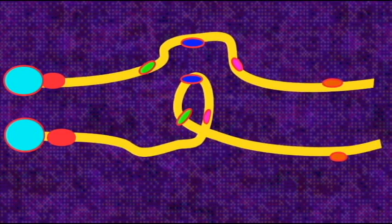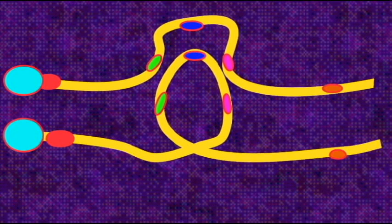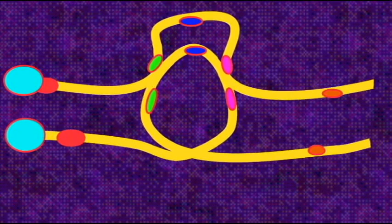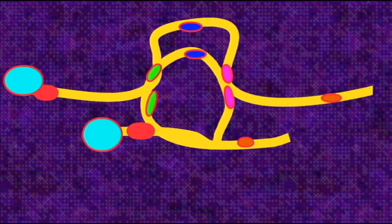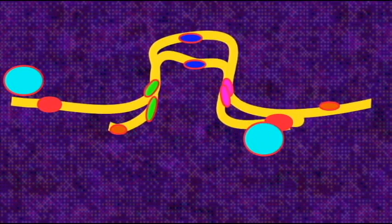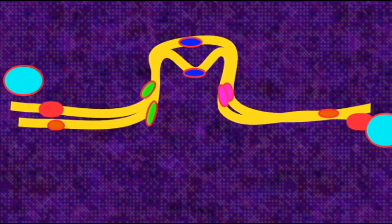Paracentric inversions are inversions which are outside the centromere. If crossing over occurs within the loop region of a paracentric inversion, dicentric and acentric chromosomes are created.